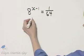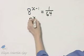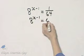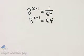I'll leave this left side alone. That's 8 raised to a power of x minus 1 is equal to, now 1 over 64 is 64 to what power? It's 64 to the negative 1 power.